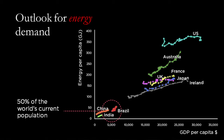Look on the top right and you'll see the affluent nations of the world. Places like the U.S., Western Europe, and Australia — we're consuming a lot of energy per citizen. But look closer to the origin, the bottom left of this graph, and you'll see China, India, and Brazil. Today their GDP per capita is relatively low, and correspondingly their energy uptake per capita is relatively low.